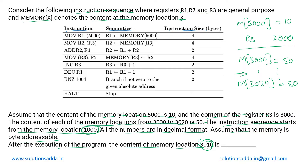The first instruction, MOV r1, [5000], moves the contents of memory location 5000 into register r1. Memory location 5000 holds 10, so r1 gets 10. The next instruction, MOV r2, [r3], moves the content at the address given by r3 into r2. Since r3 contains 3000, we are moving the content at memory location 3000, which is 50, into r2.